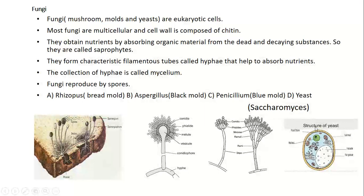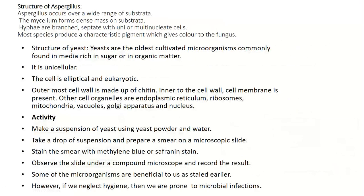Here is the structure of Penicillium blue mold, and the structure of yeast with nucleus and vacuoles. Aspergillus occurs over a wide range of substrata. The mycelium forms dense masses on substrata. Hyphae are branched and septate with uni- or multi-nuclear cells. Most species produce characteristic pigments responsible for giving color to the fungus. Yeasts are the oldest cultivated microorganisms, commonly found in substances rich in sugar or organic matter. They are unicellular with elliptical, eukaryotic cells. The outermost cell wall is made of chitin. Cell organelles include endoplasmic reticulum, ribosomes, mitochondria, vacuoles, Golgi apparatus, and nucleus.